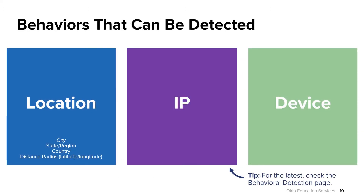Before you can use behavior detection within your Okta sign-on policies, you'll first need to configure the various behaviors themselves. The good news is that your behavior detection page within your Okta org will have every type of behavior possible already configured — examples of geolocation, IP address, device, and even velocity detection, otherwise known as impossible travel detection, will have already been added. However, you'll want to review these configurations and adjust the look-back numbers accordingly.